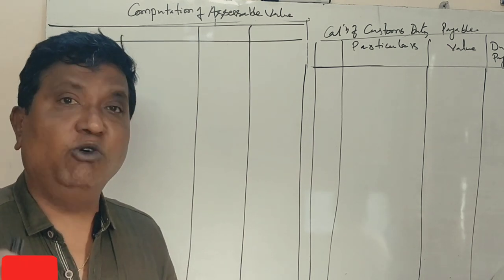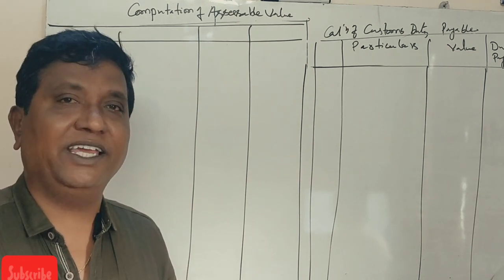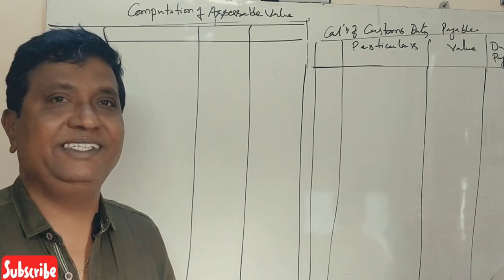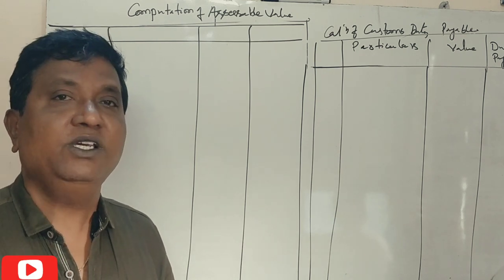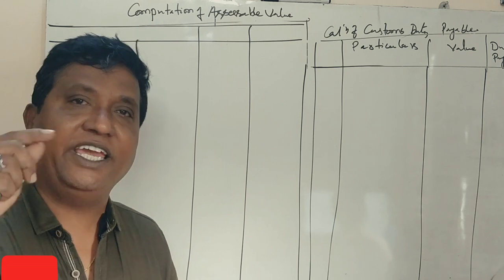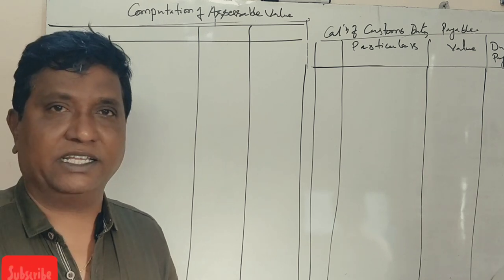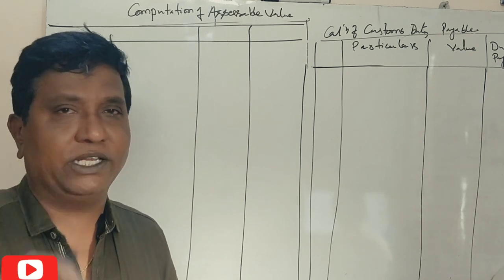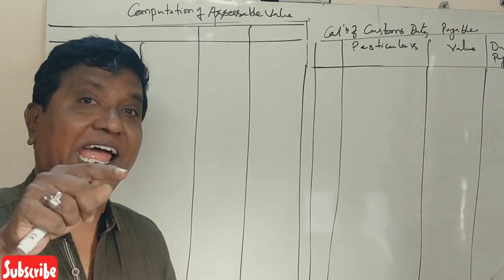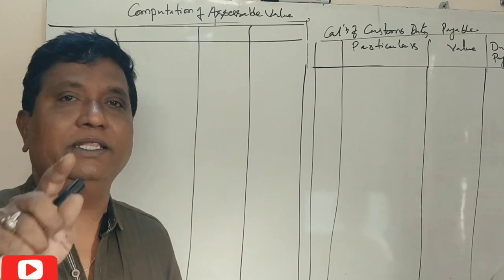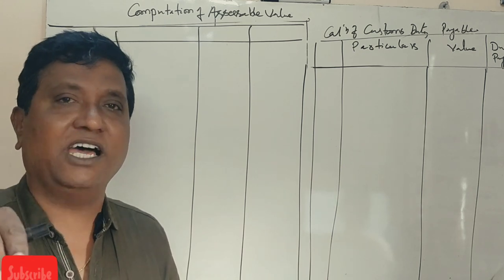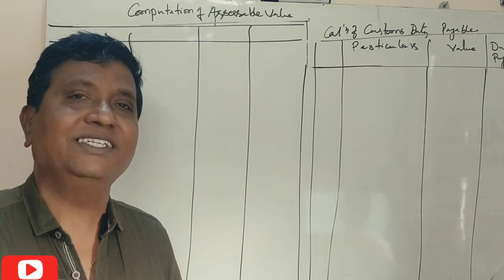The problem is that we are given the FOB value, not the CIF value. To get CIF, we need to add air freight and insurance to FOB.